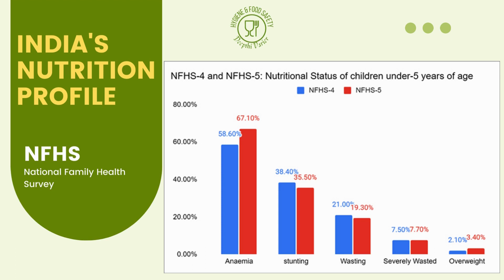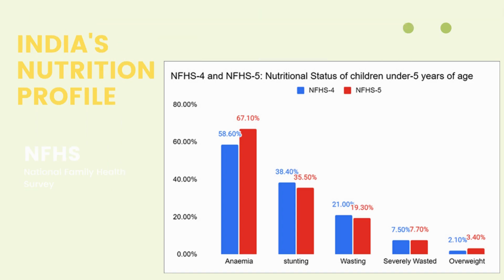The percentage of overweight children has actually increased — earlier 2.1% of the population, and now 3.4% of children below five years of age are overweight. Similarly, anemia has increased significantly amongst children below five — it has become significantly worse and it shouldn't be happening. Most of these indicators are in fact increasing, and the prevalence has become more.